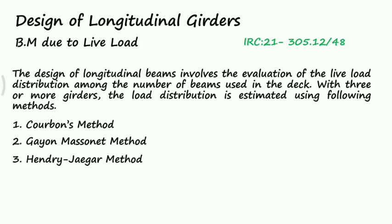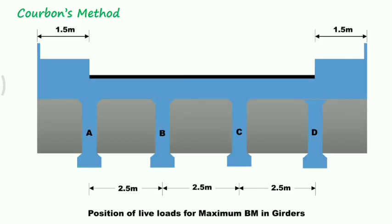Among these methods, Corbin's method is the simplest and is applicable when the following conditions are satisfied: first, the ratio of span to width of deck is greater than 2 but less than 4; second, the longitudinal girders are interconnected by at least 5 symmetrically spaced cross girders; and third, the cross girders extend to a depth of at least 0.75 times the depth of the longitudinal girders.